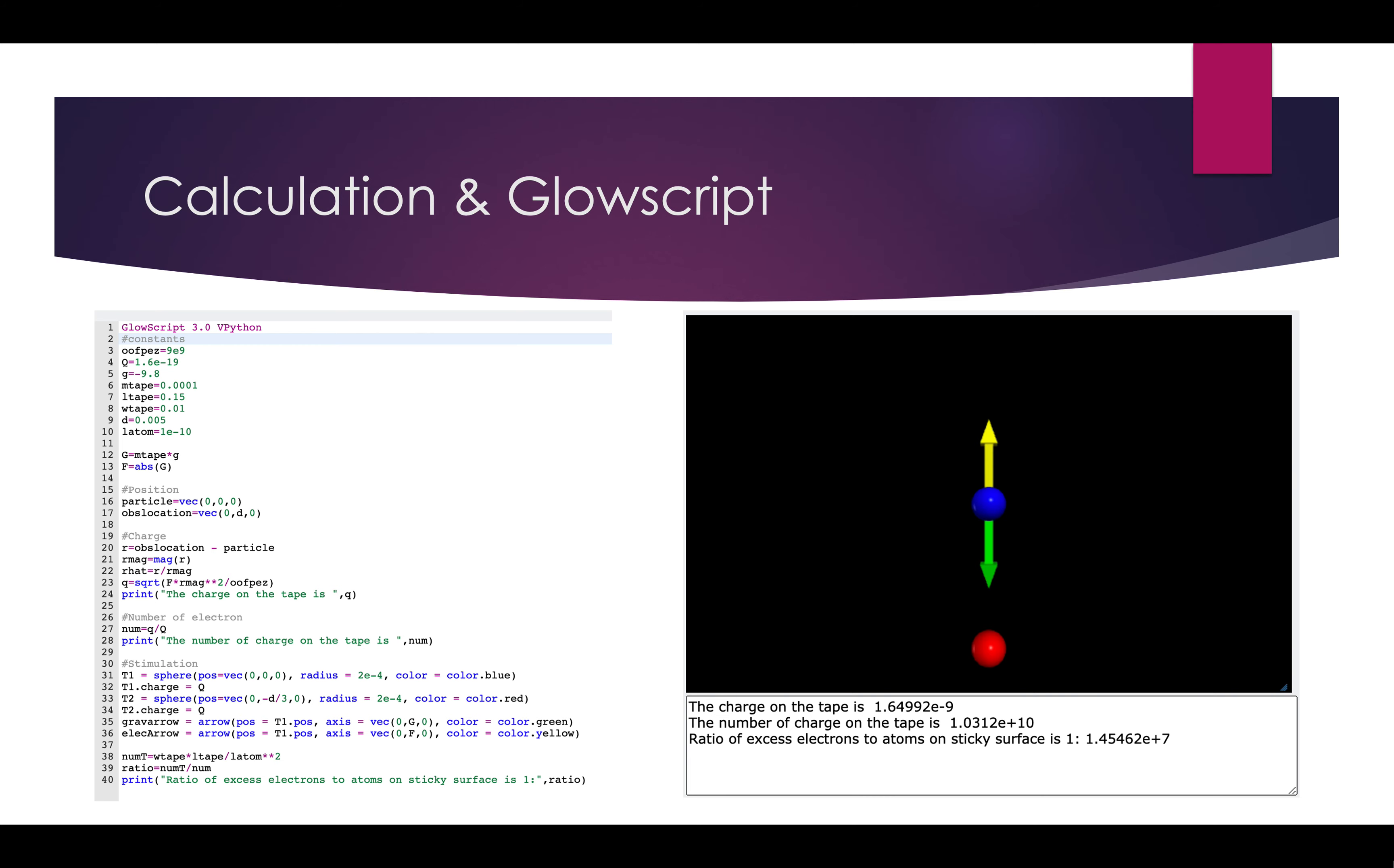And the final answers are here. We have the charge on the tape is about 1.6 times 10 to the 9th. And we have the number of charges on the tape is about 1.03 times 10 to the 10th. And the ratio of atoms to electrons is about 1 to 1.45 times 10 to the 7th.